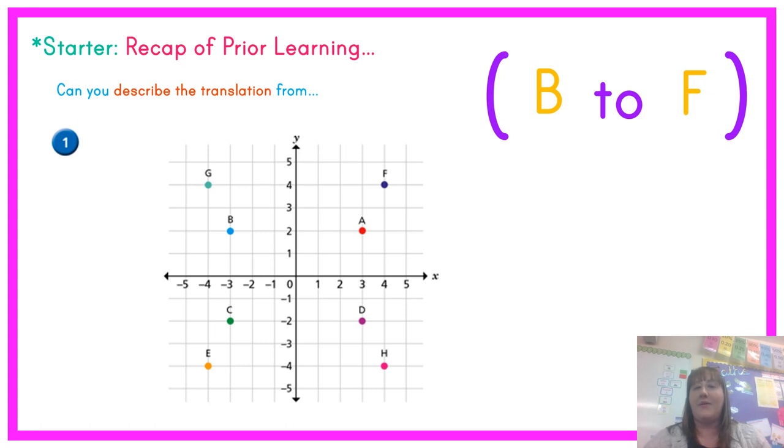We are now describing the translation from point B to F. So B is in our second quadrant and this time we're going to have to do two steps to our translation. So first I'm going to go right. So 1, 2, 3, 4, 5, 6, 7 right. And then we're going up now to point F and up 1, 2. So the translation would be 7 right, 2 up.